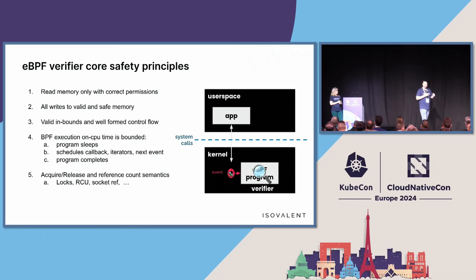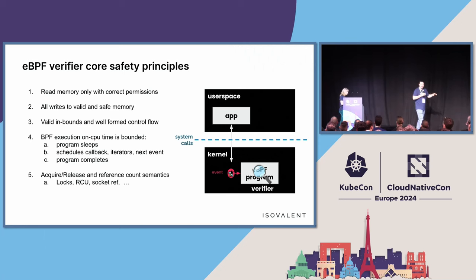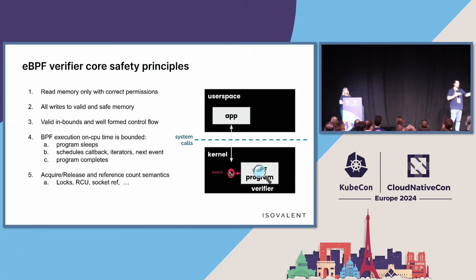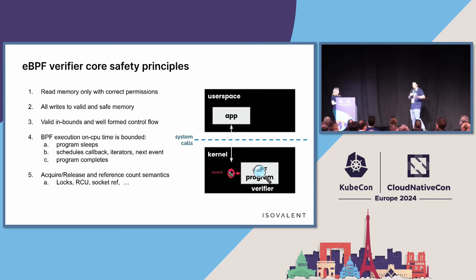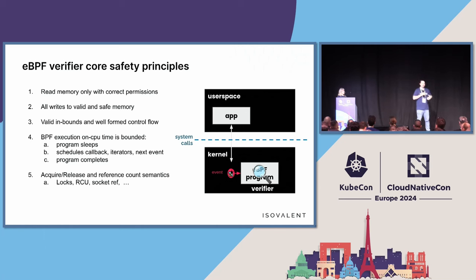We definitely want to make sure you're only writing to memory you're allowed to — not to random spots in memory. We also want to ensure that control flow is well-formed and valid. We don't want a BPF program to jump off into the kernel somewhere and run arbitrary code. What does it mean for eBPF programs to be bounded? Originally, that meant the program ran to completion. But over time BPF has evolved — programs can now sleep, do callbacks and iterations, and keep running. What we want to verify is that we don't get a program stuck on the CPU so long it looks like the system is hung.